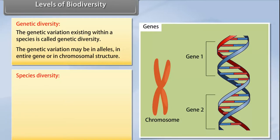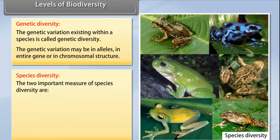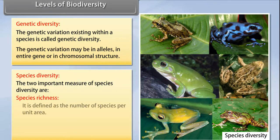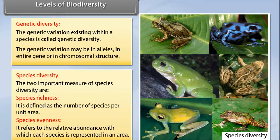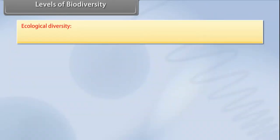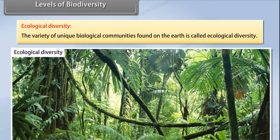Species diversity has two important measures: species richness, defined as the number of species per unit area, and species evenness, which refers to the relative abundance with which each species is represented in an area.